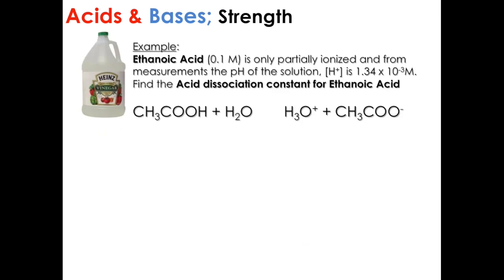An example is etanoic acid. If we have 0.1 molar, it is only partially ionized, and from measurements the concentration of hydrogen ions in the solution is 1.34 times 10 to the negative 3 molar. Find the acid dissociation constant for etanoic acid.